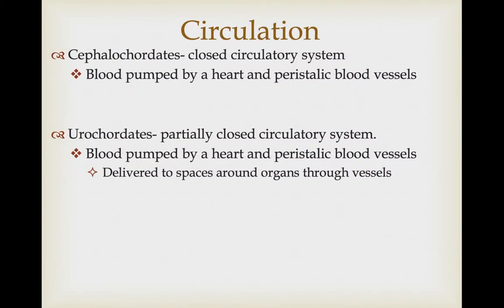Cephalochordates have a closed circulatory system — blood is pumped by a heart and also by peristaltic muscular contractions in the blood vessels themselves. The urochordates have a partially closed circulatory system where blood is pumped by a heart and peristaltic blood vessels, but it's not delivered through a tiny series of capillary beds. Instead, it's delivered to larger spaces around organs through vessels, which then collect blood from those spaces and return it to the heart.